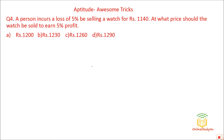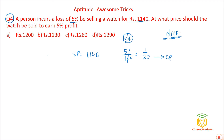These problems should now be easy. Question number 4 — try solving it yourself first. A person incurs a loss of 5% by selling a watch for Rs. 1140. 5% = 5/100 = 1/20. So the person bought at 20 rupees and is selling at a loss of 1 rupee, meaning the selling price is 19 rupees.